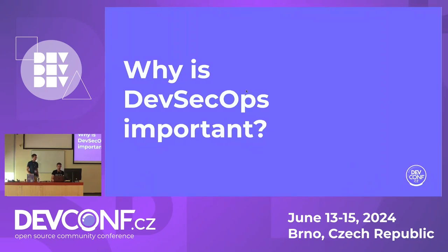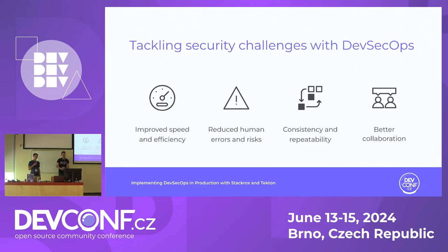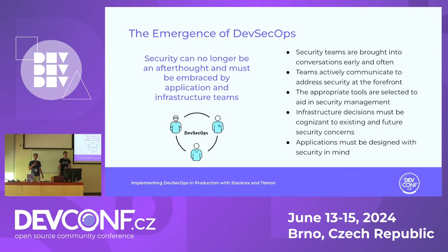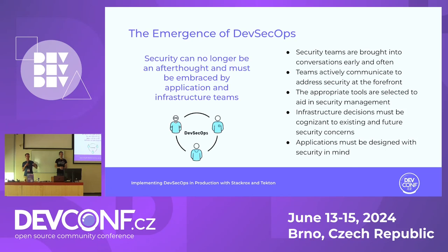Why is DevSecOps important? We have several challenges in these kinds of processes: we need to improve speed and efficiency, reduce human errors, ensure consistency and repeatability, and achieve better collaboration. Those are the core principles of DevOps applied to DevSecOps as well. The basic thought is that security shouldn't be an afterthought — it should be implemented at all stages of the development process, including the security team early on and continuously validating and verifying all of these steps.